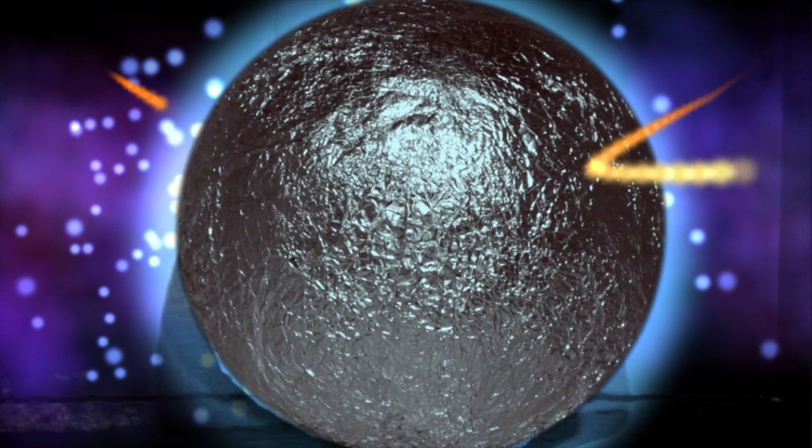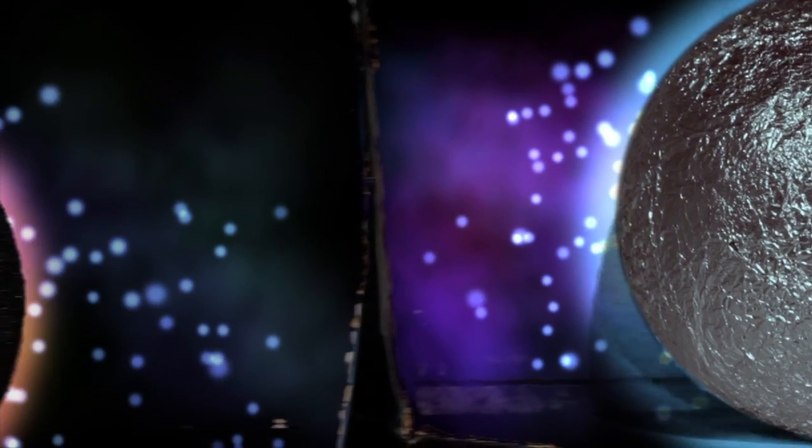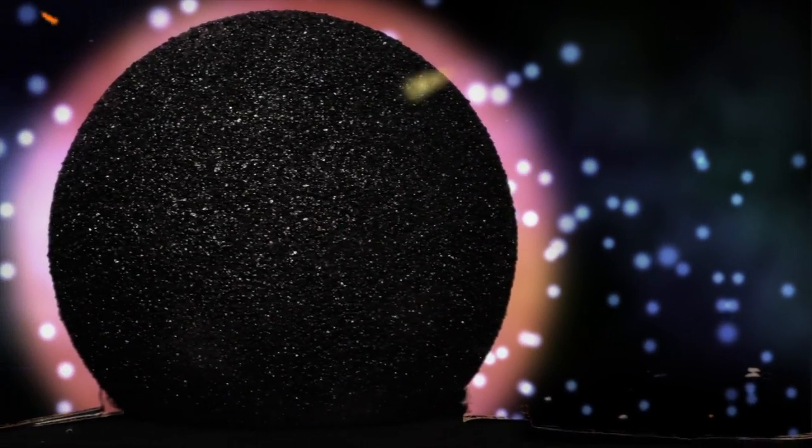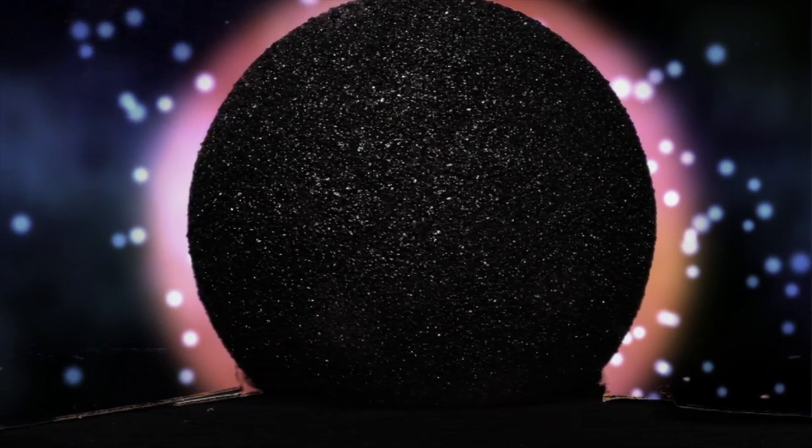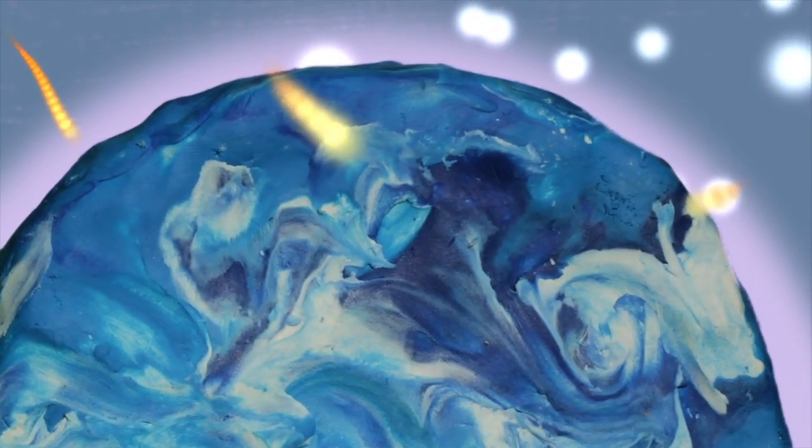For instance, the albedo of a perfect mirror would be 100%. If we had a completely black surface, the albedo would be 0%. Or a water world, that could be 20%.